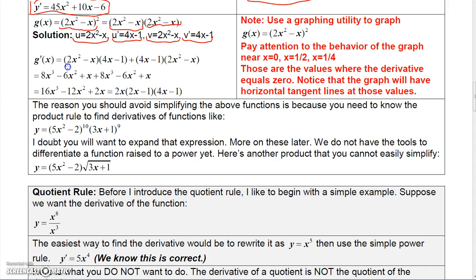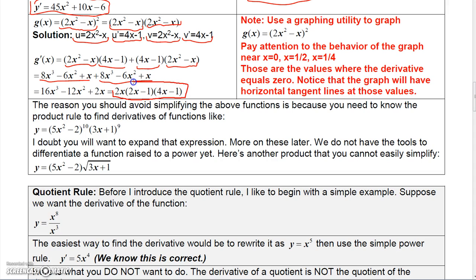Using the product rule: u times v′ plus v times u′. FOILing both sides produces two identical trinomials. Combining like terms gives 16x³ − 12x² + 2x. Factoring out 2x yields a trinomial that factors into (2x − 1)(4x − 1), so the final derivative in factored form is 2x(2x − 1)(4x − 1).